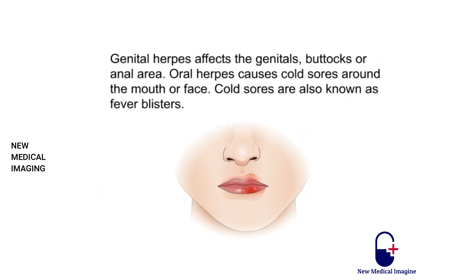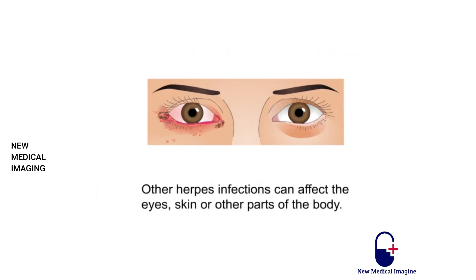Genital herpes affects the genitals, buttocks, or anal area. Oral herpes causes cold sores around the mouth or face, also known as fever blisters. Other herpes infections can affect the eyes, skin, or other parts of the body.